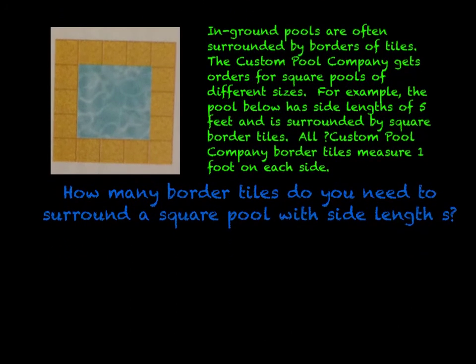Now let's think about the concept of these pools. In-ground pools are often surrounded by borders of tiles. The custom pool company gets orders for square pools of different sizes. For example, the pool below has side lengths of 5 feet and is surrounded by square border tiles. All custom pool company border tiles measure one foot on each side. How many border tiles do you need to surround a square pool with side length S?